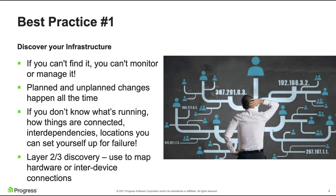So let's take a look at some of the best practices that we've noticed. The number one best practice — and really this is table stakes — you've got to discover your infrastructure. If you can't find it, you can't monitor it, and you can't manage it. Your network is a living, breathing thing that is constantly changing. Whether those changes are planned or unplanned doesn't matter. If you don't know what is running, what's connected, what's dependent on what, where those items are, and in what locations, you're just setting yourself up for failure. You need a layer 2 or 3 discovery that will figure out what's connected to your network and map it out.